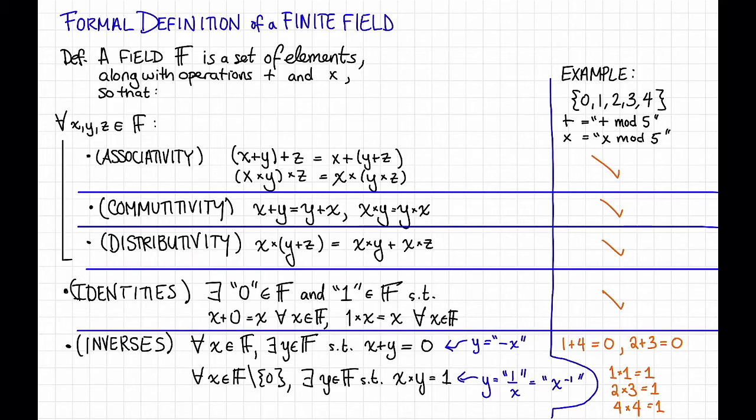So everything has a multiplicative inverse as well. Great. So now we can put a check here, we have inverses. Since all of these desiderata are satisfied, this here is a legitimate finite field. So that's an example. Let's see a non-example.